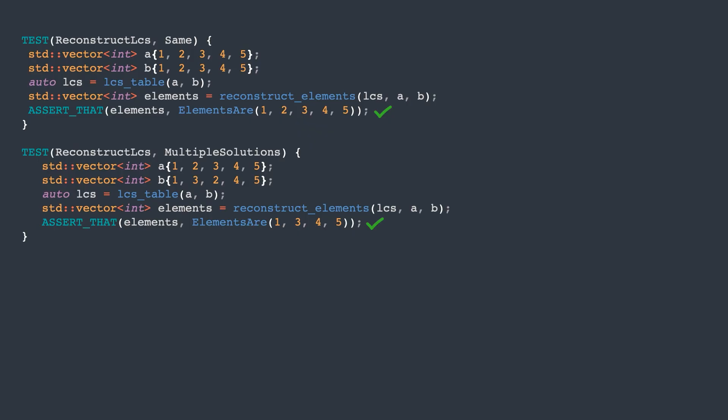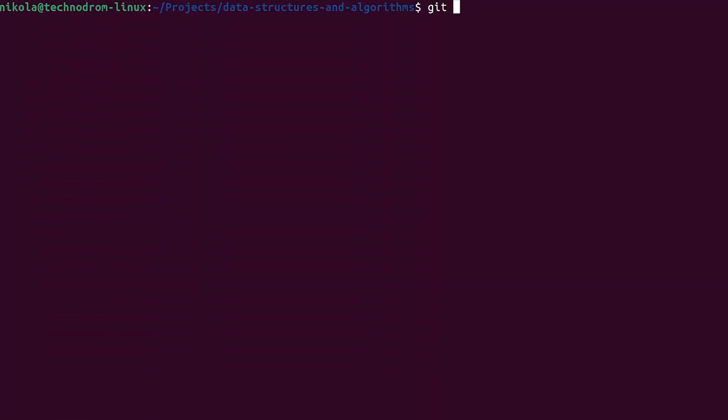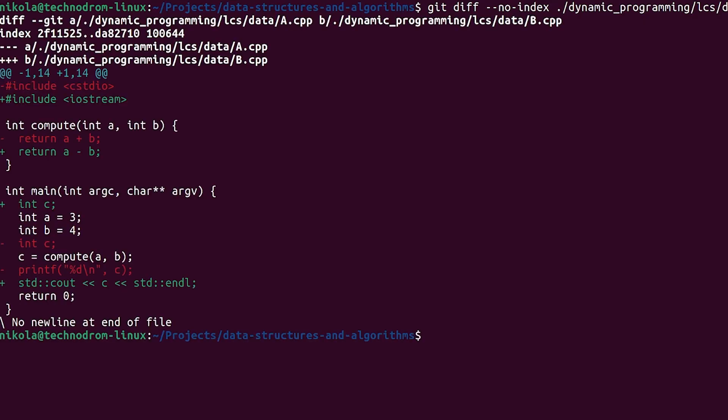We are now ready to find the difference between two text files. I've created two simple C++ files to test our solution. First, let's run the git diff command to get an idea of the output we want to get. Lines starting with minus are deleted, and lines starting with plus are added to file A, and applying these changes results in file B.